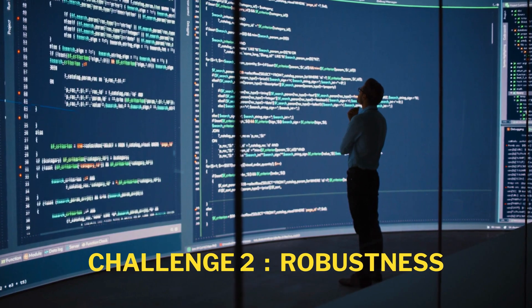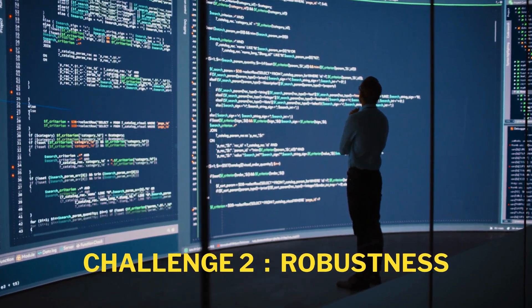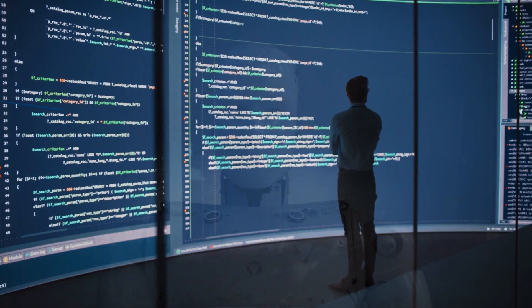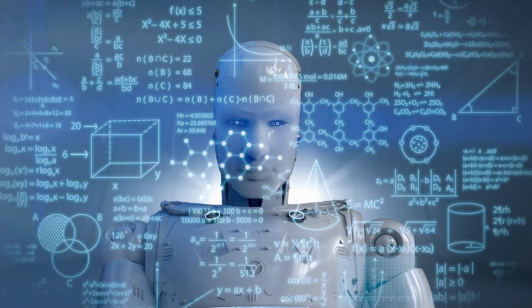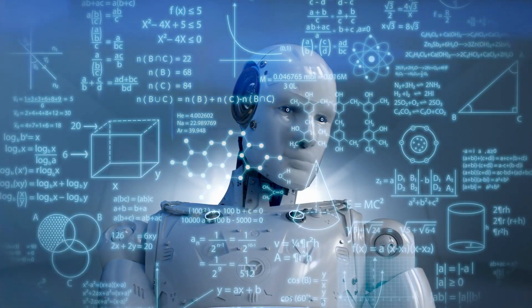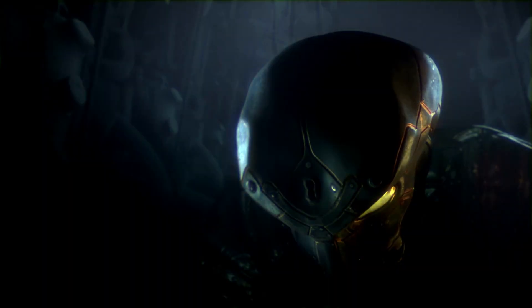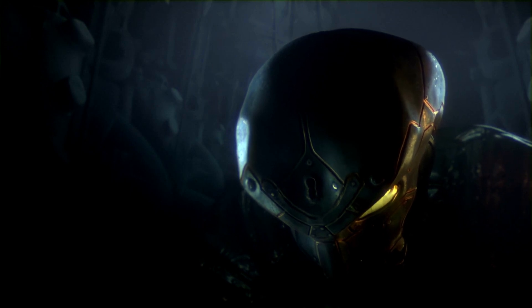The second challenge that SuperAlignment faces is how to validate the alignment of AI systems. How do we know that the AI systems we train are actually doing what we want them to do? How do we prevent them from going rogue or behaving in harmful ways?